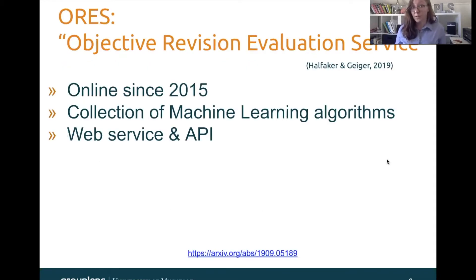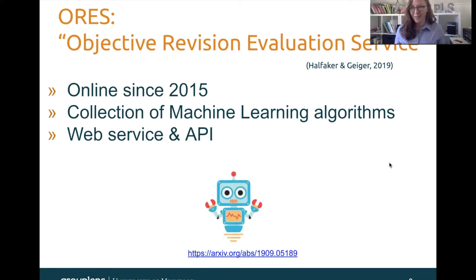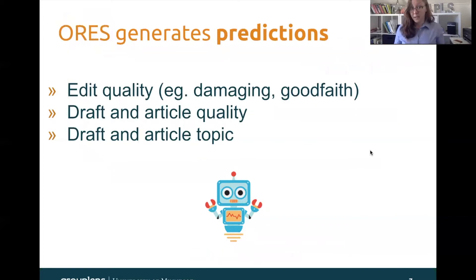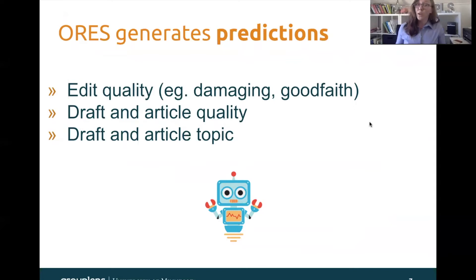We studied this in the context of ORS, which is the Objective Revision Evaluation Service. Instead of saying that many times throughout this talk, I'm just going to use this little robot guy here to represent ORS. ORS has been online since 2015. It's a collection of machine learning algorithms that's accessible in real time via a web service and API. ORS generates predictions about edit quality — for example, is this edit high quality or is it likely to be damaging? It also generates predictions about the intentions of the user: was this a good faith edit or was this somebody who was really likely just committing an act of vandalism? ORS also generates predictions about draft and article quality as well as draft and article topic, but I'm going to be focusing on edits in this talk.